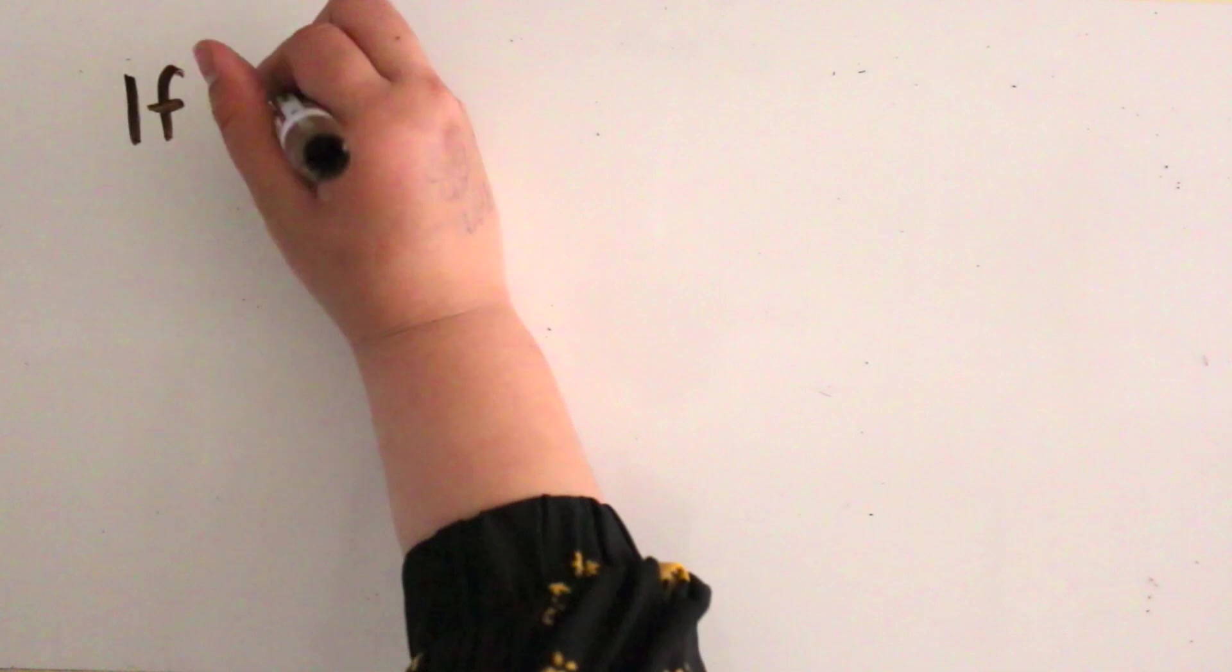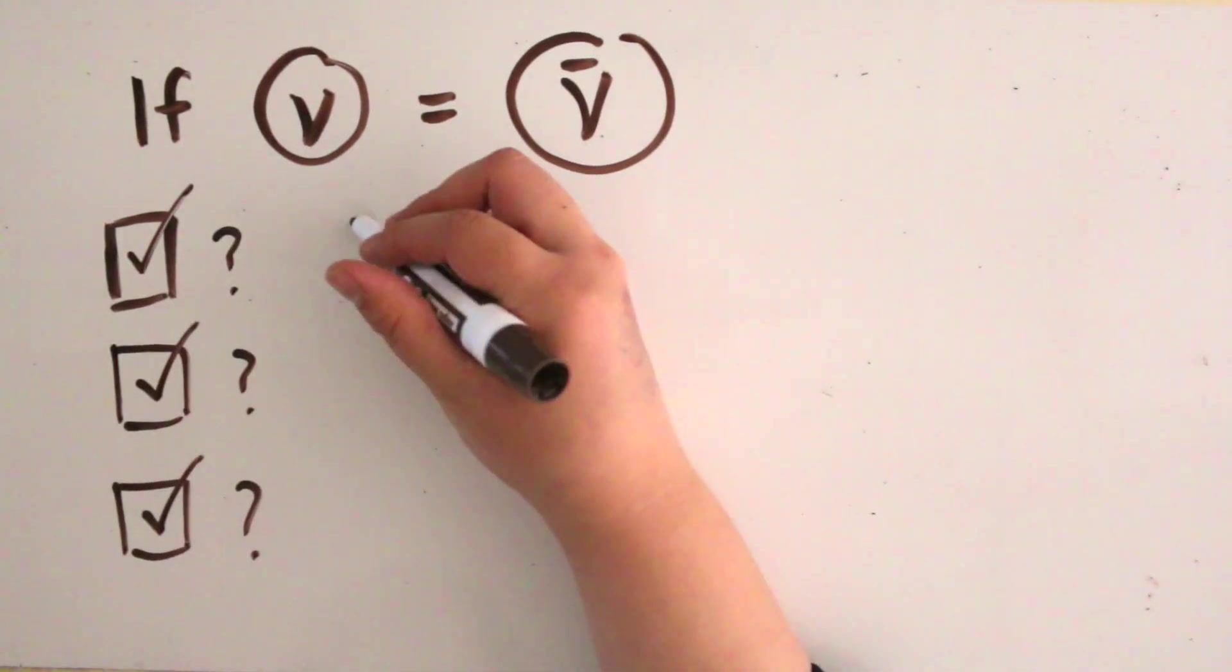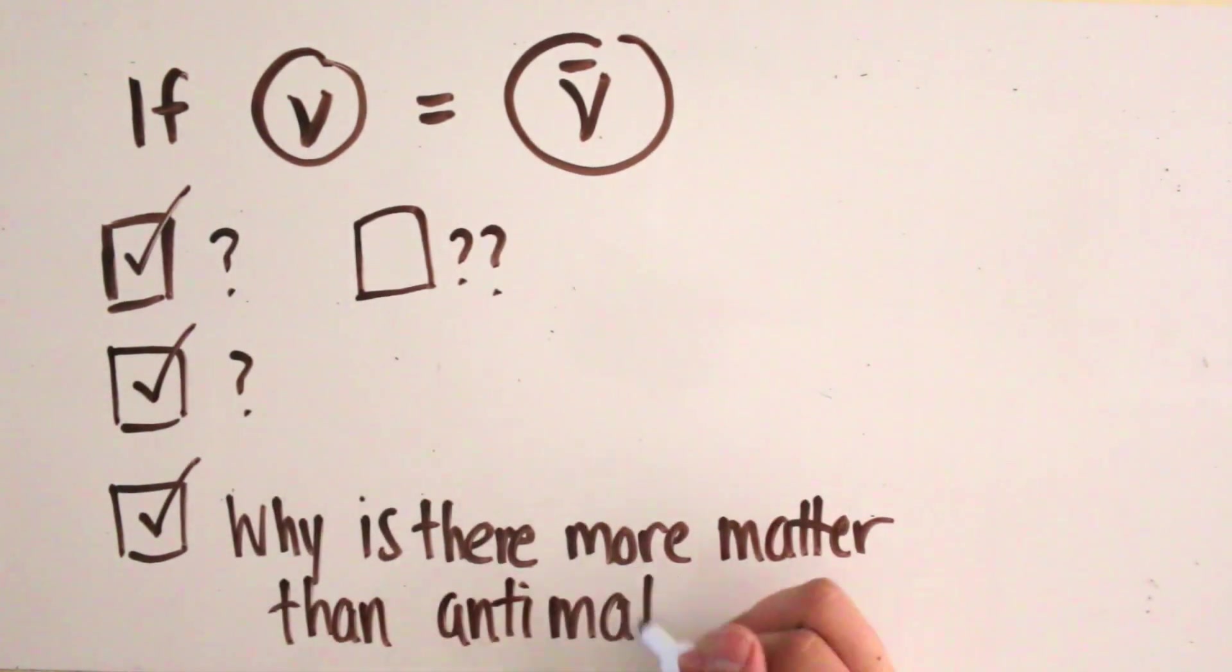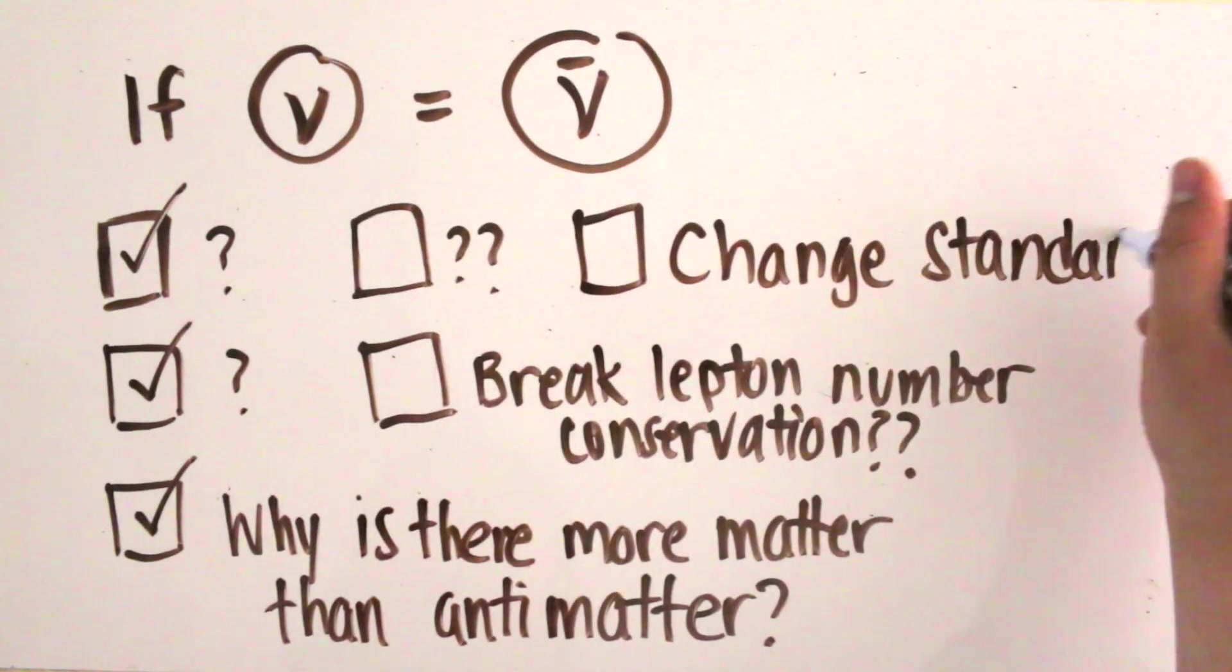If we find that neutrinos are their own antiparticles, it will answer many questions and raise many questions. It can answer the long-asked question of why we have so much more matter than antimatter. It would also break lepton number conservation, changing our current standard model.